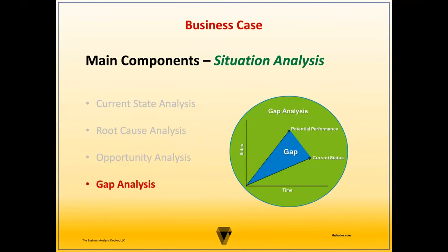Do nothing, or status quo: in this option, the organization chooses to maintain the current state and not take any action to address the problem or opportunity. It implies that the organization is willing to accept the current situation and its associated risks, costs, or limitations. This option is often used as a baseline for comparison to the other solution options to assess the relative benefits.